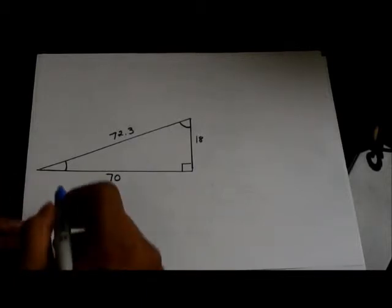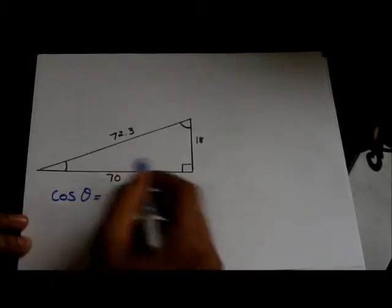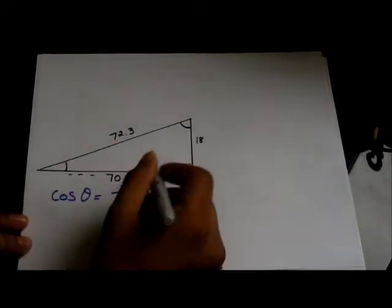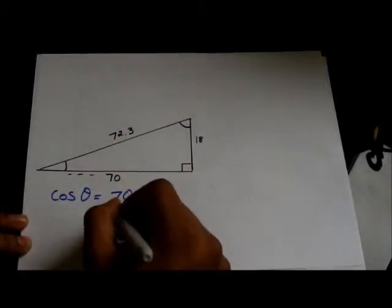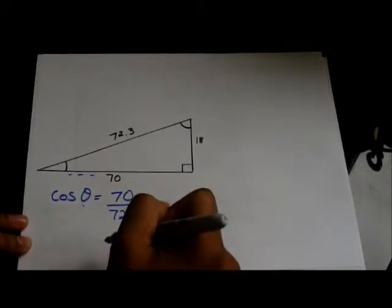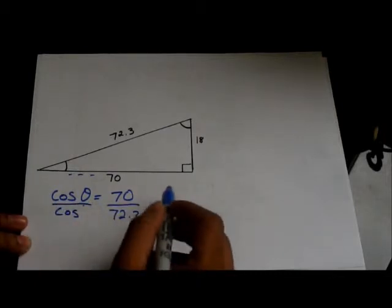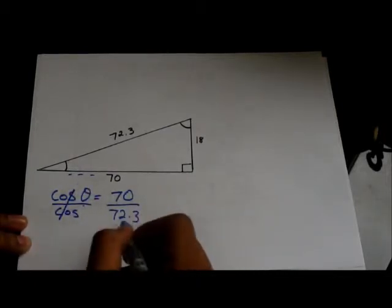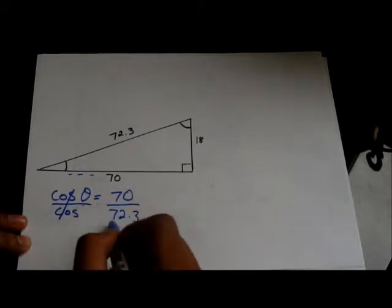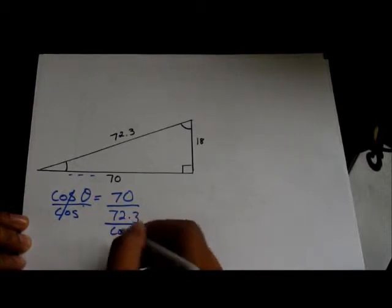So, cosine theta is equal to the adjacent, which we know is 70, right? This is the adjacent over the hypotenuse, 72.3. So, we're trying to isolate for this. How do we do that? Well, we divide this by cos. Cos, if that gets rid of cos, and we have to divide the other side of the equation by cos. But this is inverse, right?